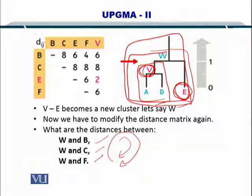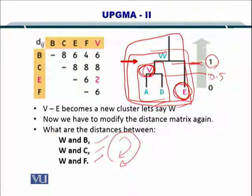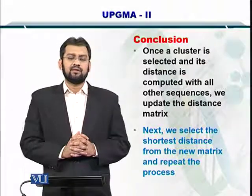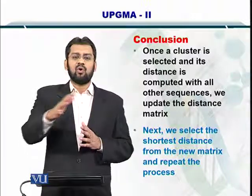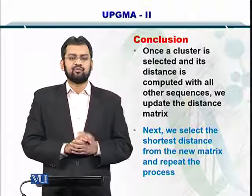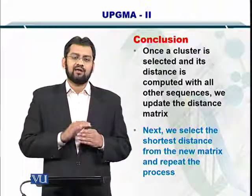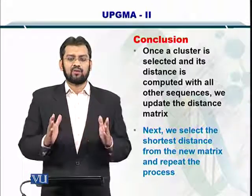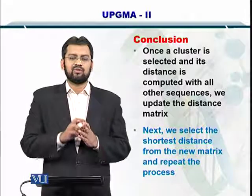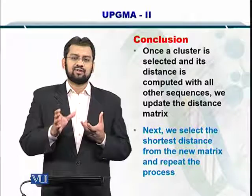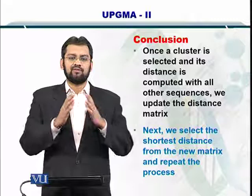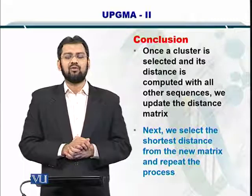In conclusion, once a cluster is selected, then you have to compute its distance with all other clusters and sequences. Let me clarify once again that the first distance matrix only comprises the sequences. But once you make a cluster out of two sequences, then you have a cluster and several sequences in the distance matrix. You continue creating these clusters and at the end you get the whole phylogenetic tree.